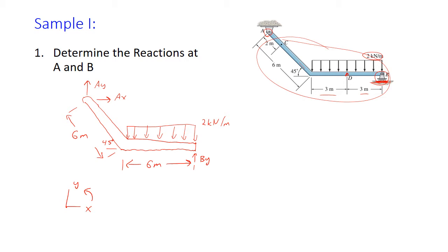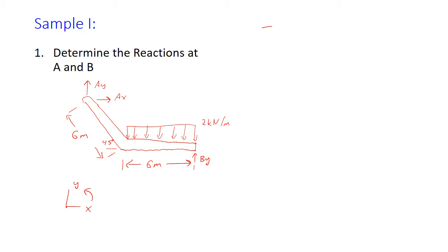Once we have our free body diagram complete, we actually do not need our original diagram — our free body diagram should stand alone with no extra information needed. To determine our reactions Ax, Ay, and By, let's begin by summing the forces in the X direction equal to zero. In the X direction we have Ax and nothing else, so Ax is equal to zero. That's a pretty straightforward one.